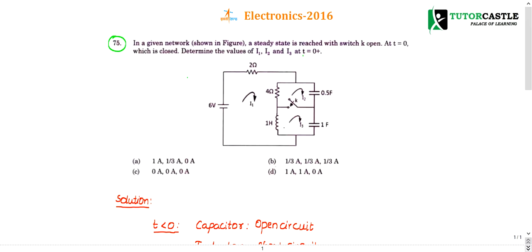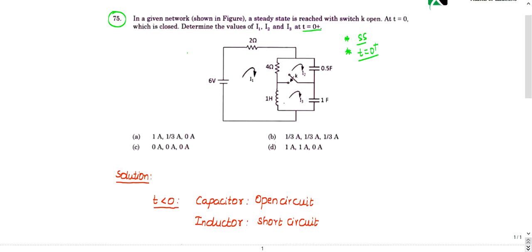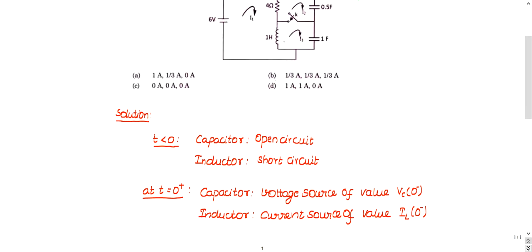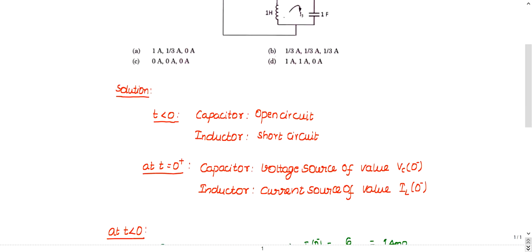There are two cases to study in transients: steady state conditions, and conditions at t equal to 0 plus. If you can study these two points, you would have covered the transient chapter properly. By this lecture you can cover at least 30 to 40 percent of the transients topic.